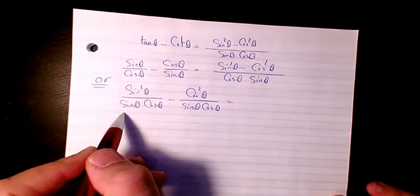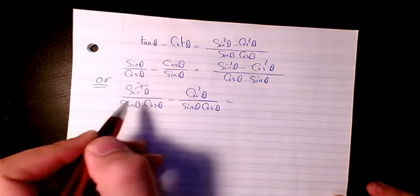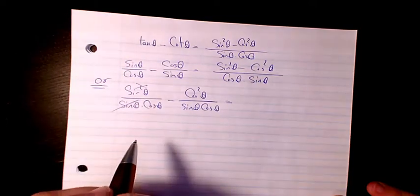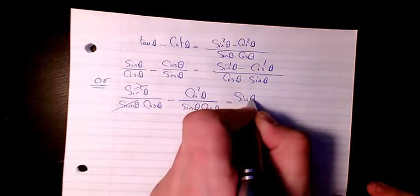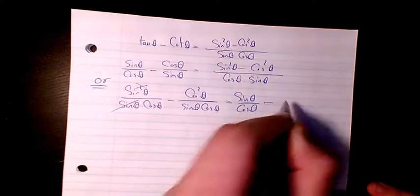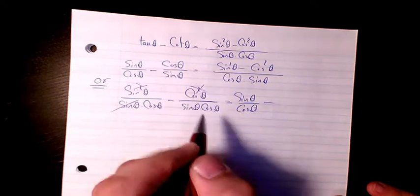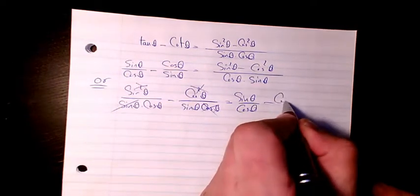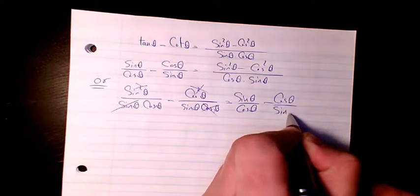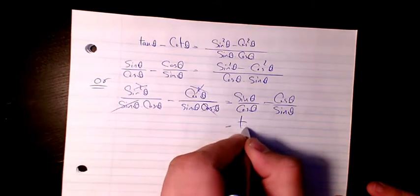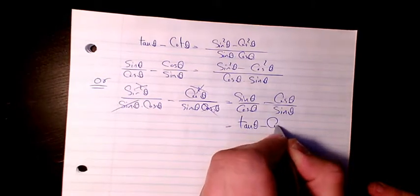Sine squared divided by sine to cancel out the exponent. So we will have sine theta divided by cosine theta. Here, we have cosine squared divided by sine and cosine. This exponent and this one cancel out. It's going to be cosine theta divided by sine theta. So the answer will be tan theta minus cotin theta.